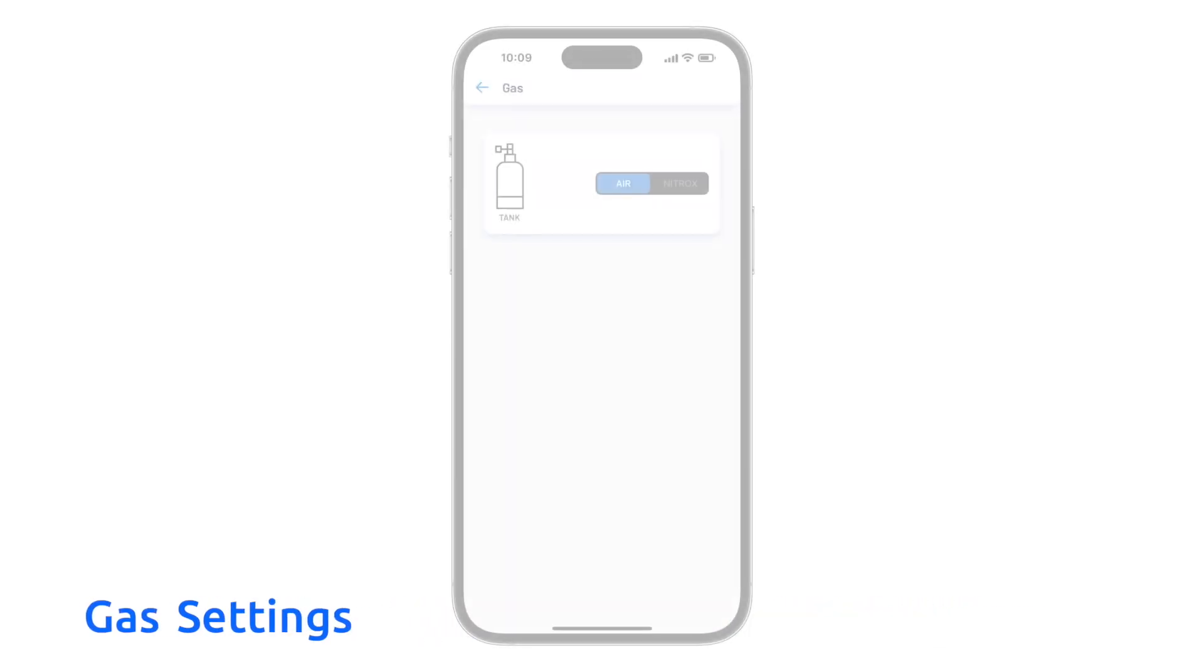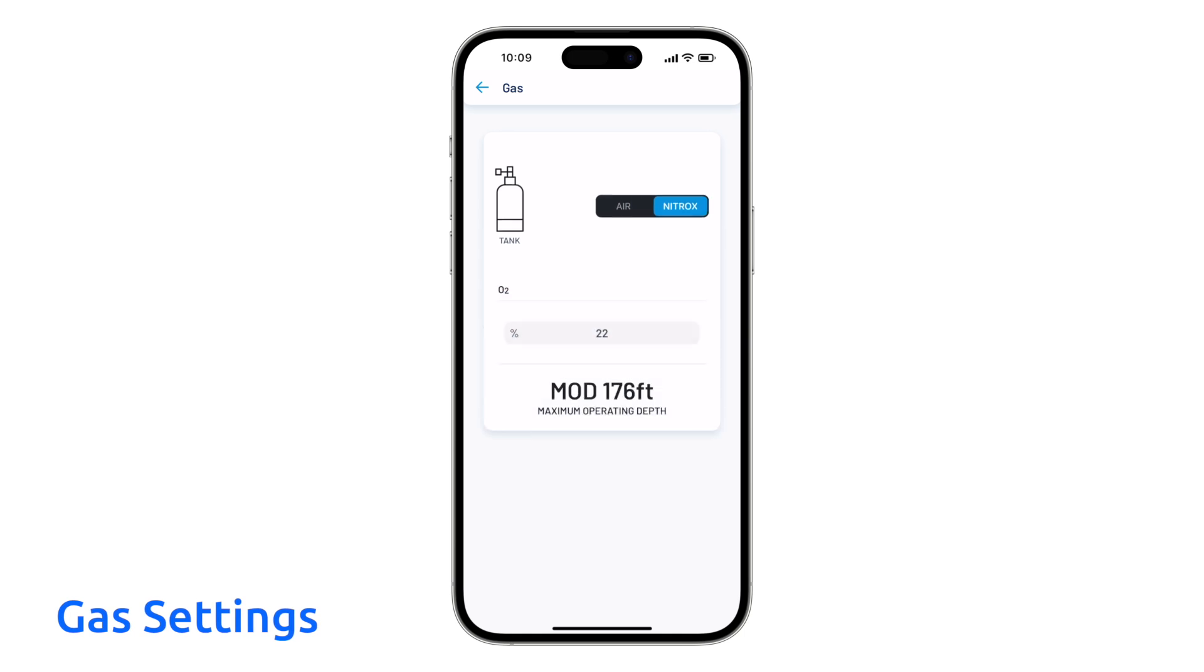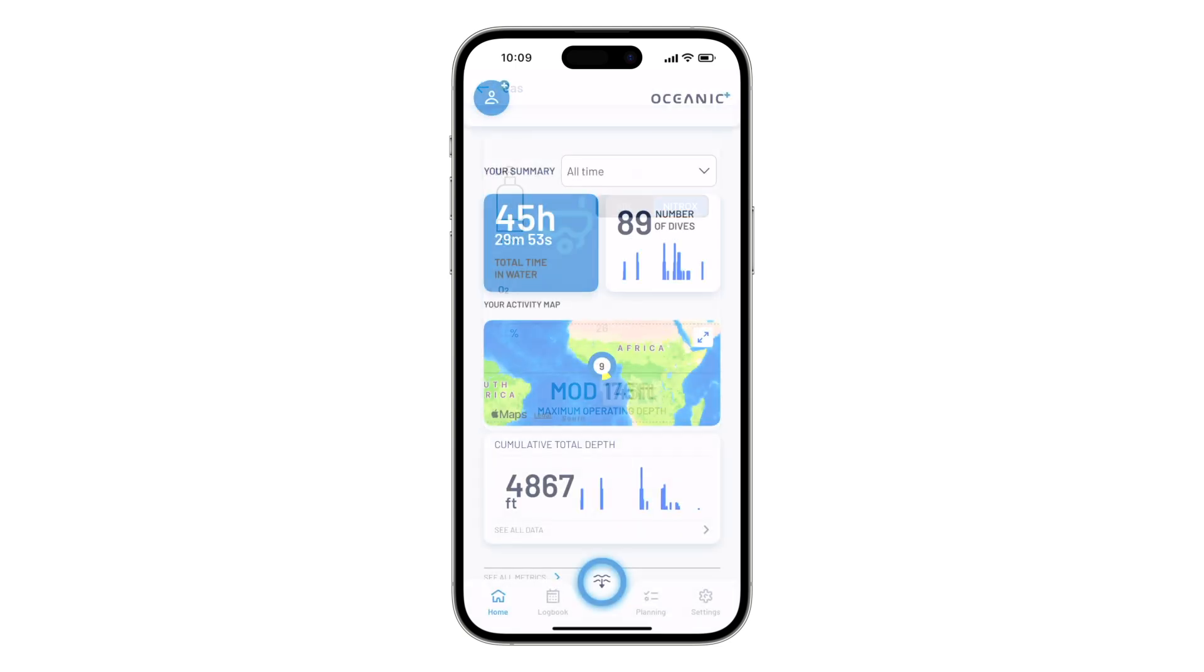Now that we have given you an overview of the Buhlmann algorithm and decompression within Oceanic Plus, let's look at the gas options. Oceanic Plus is capable of both air and nitrox gases enriched with oxygen up to 40%. Once you know the gas mix for your dive, you can set it on either device.